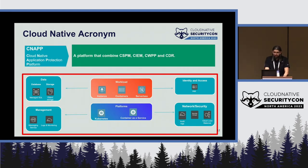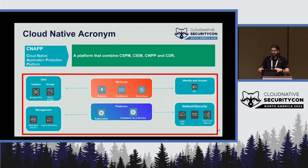The last acronym is CNAPP — Cloud Native Application Protection Platform — and it's simply a combination of those solutions: CSPM, CWPP, and CDR. The idea is to have a single solution that combines everything, because integrating all the data coming from these different sources makes building protection more sophisticated.